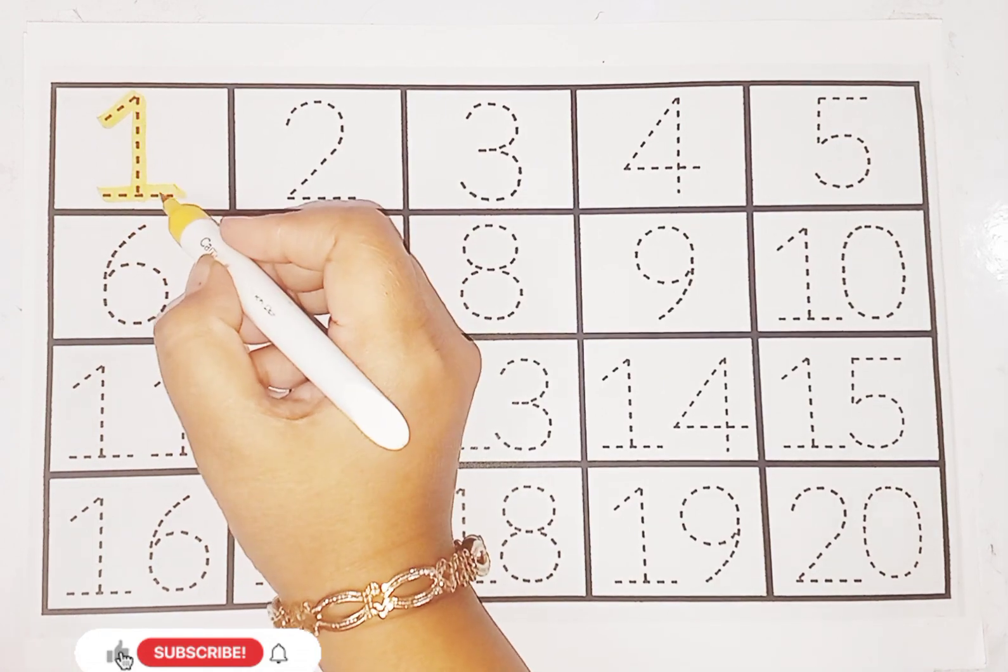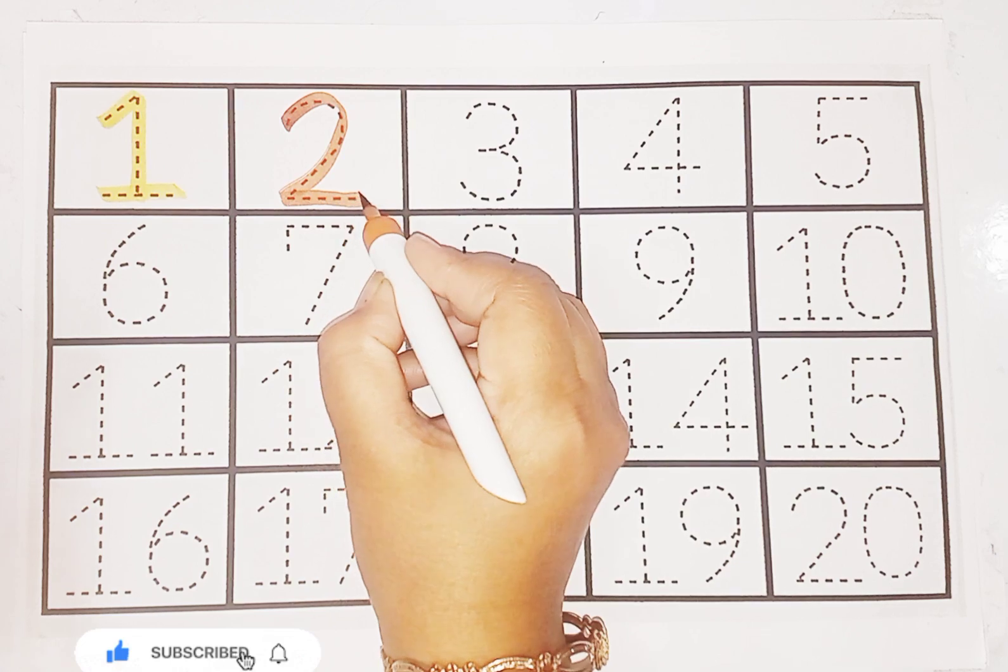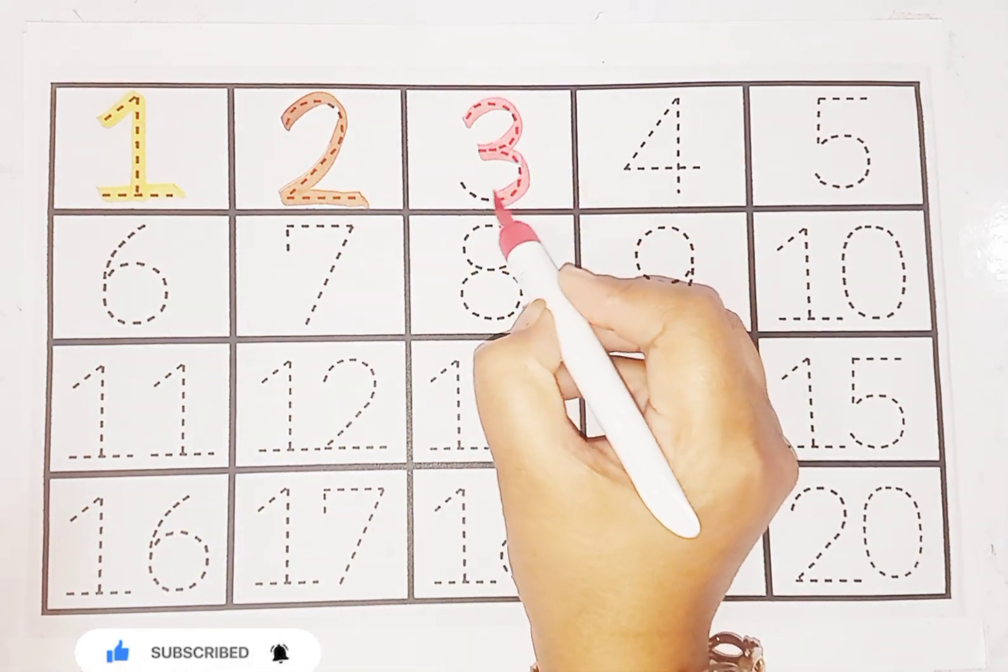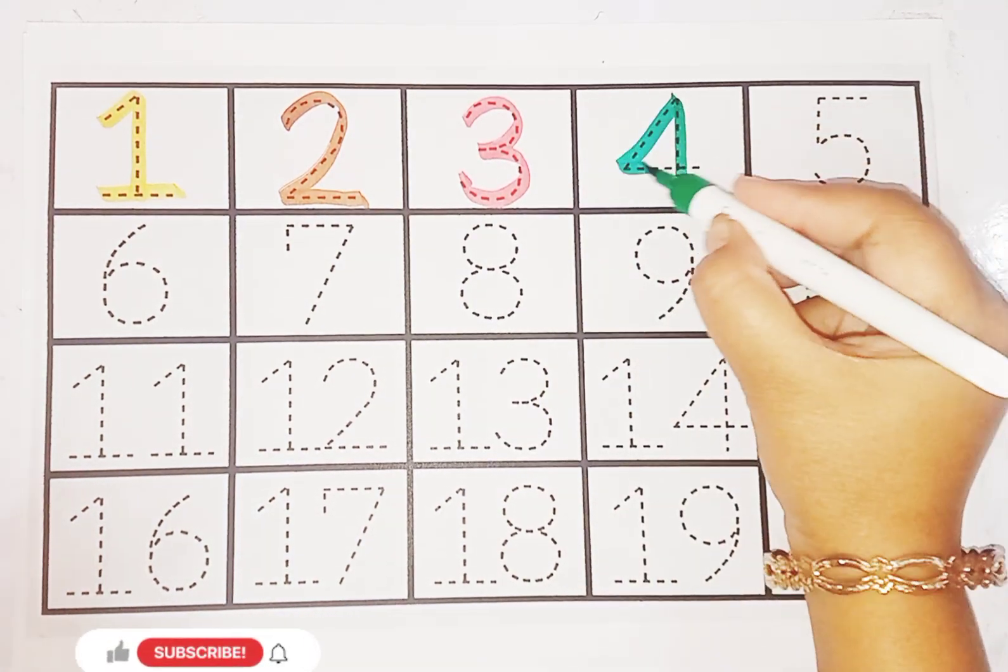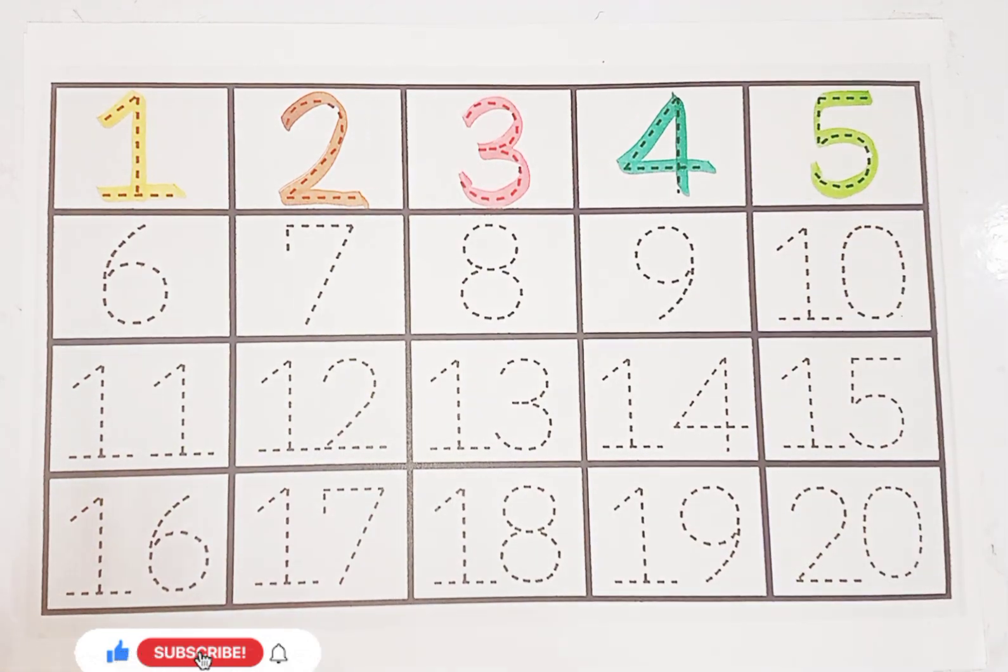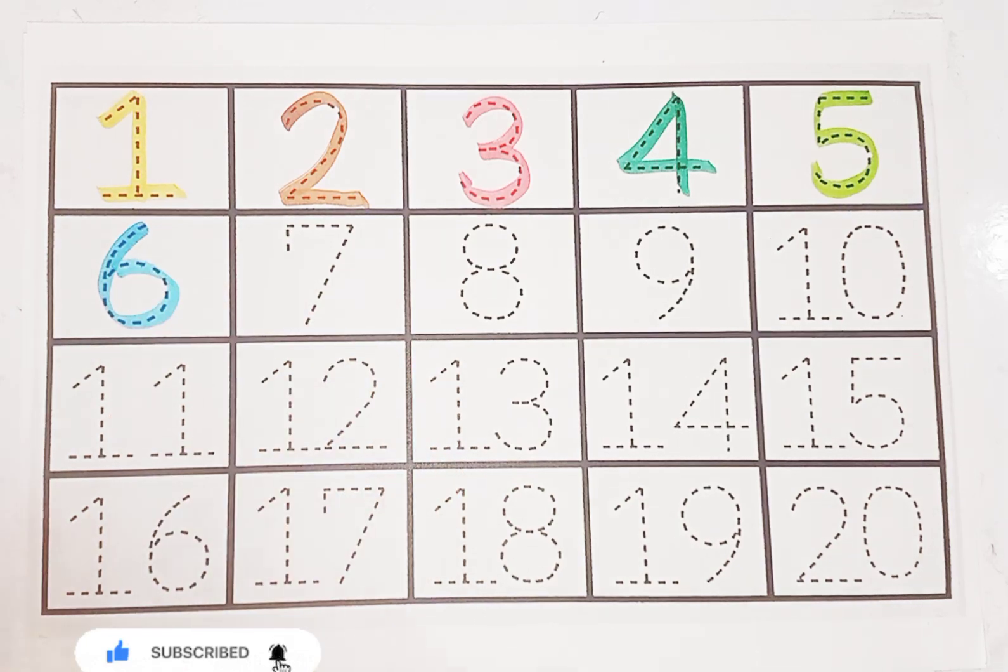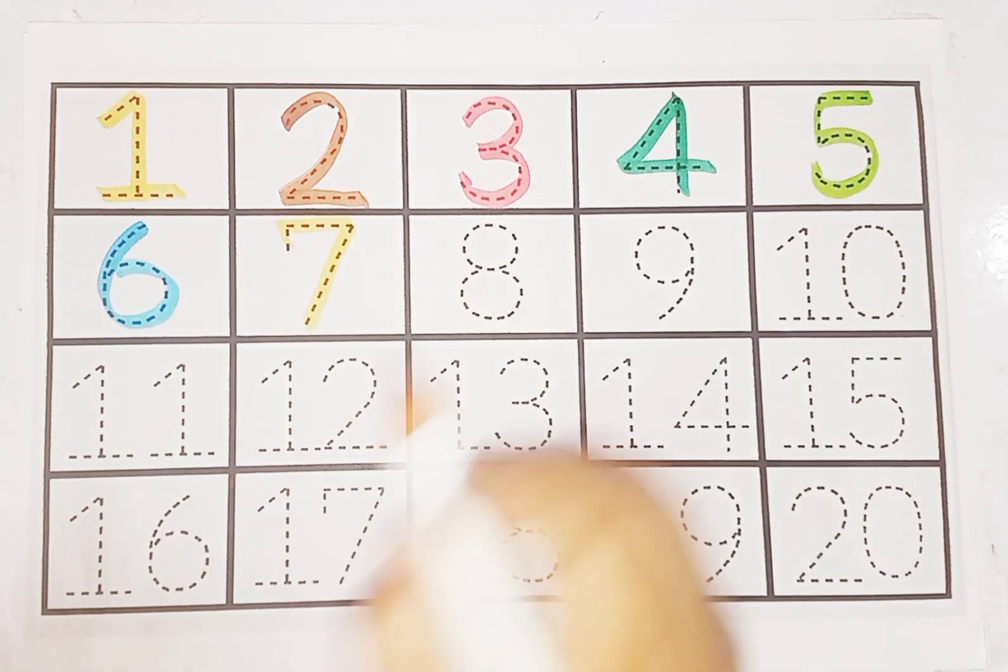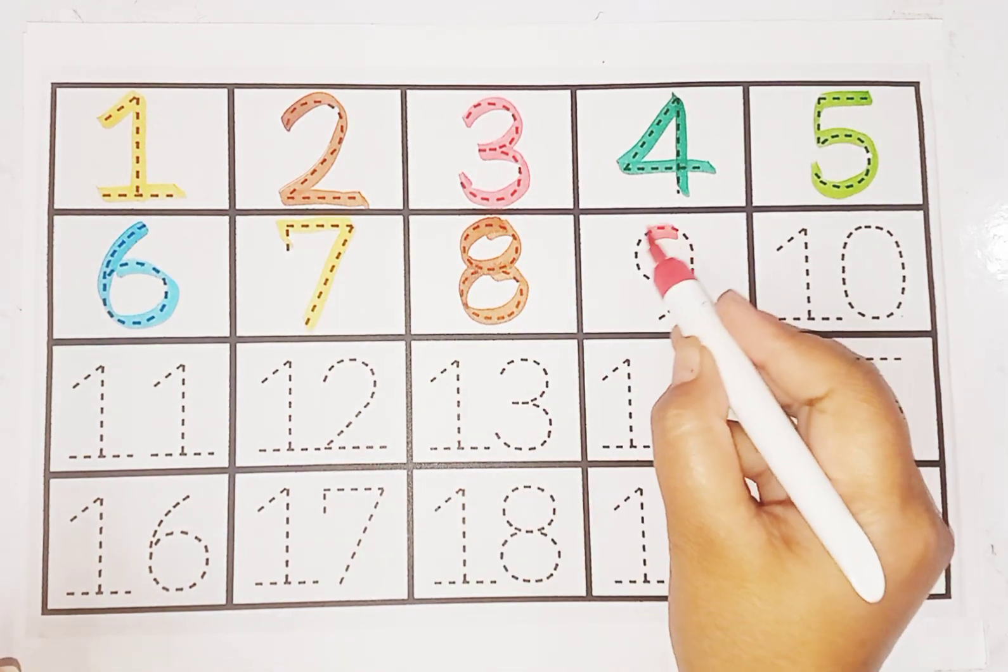1, this is number 1. Next is number 2. Now this is number 3. Number 4. Number 5. Number 6. Number 7. Number 8. Number 9.